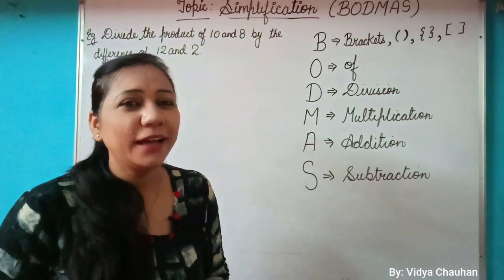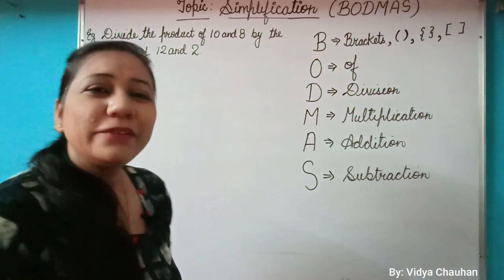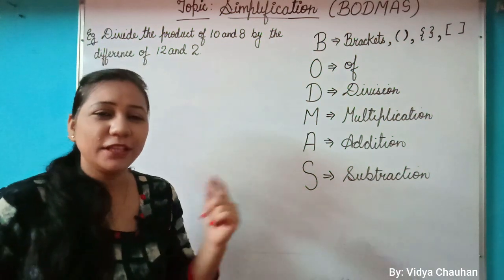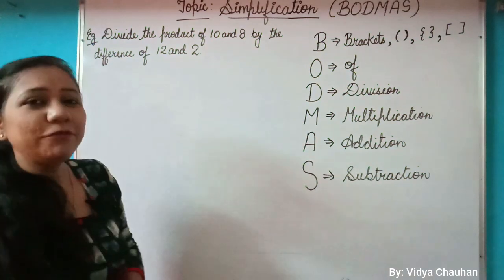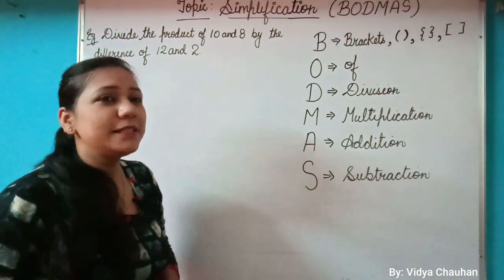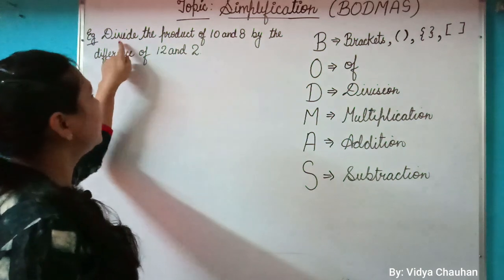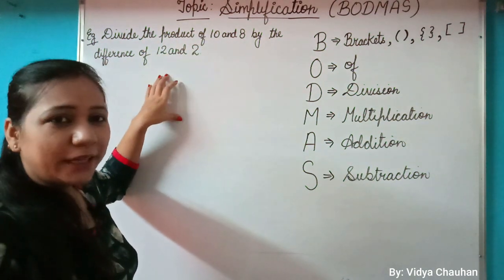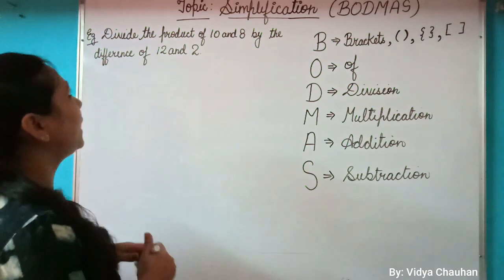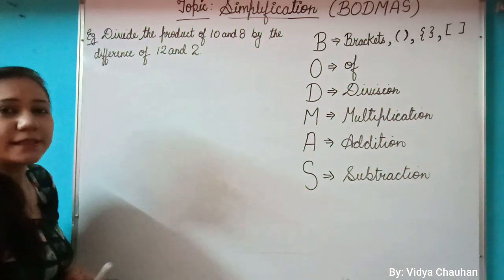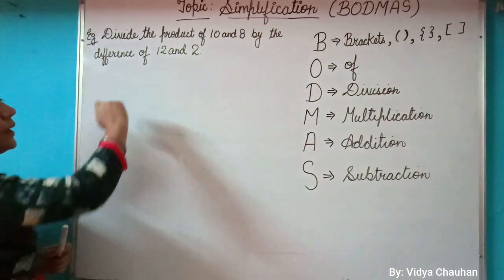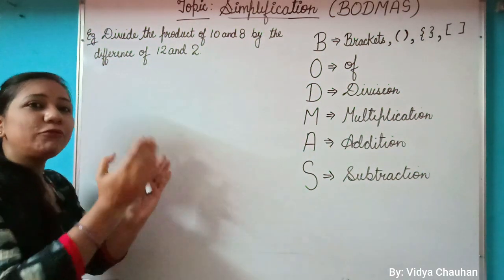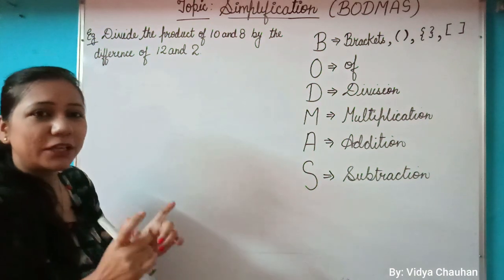Hello students, welcome back. We will once again continue with the BODMAS rule, but this is a different type of problem. The problem is in word form, meaning it's not in simplified numerical format but in word format. To solve this, very first it is required to understand what is being said in the statement, and then you have to convert it into a simplification statement.